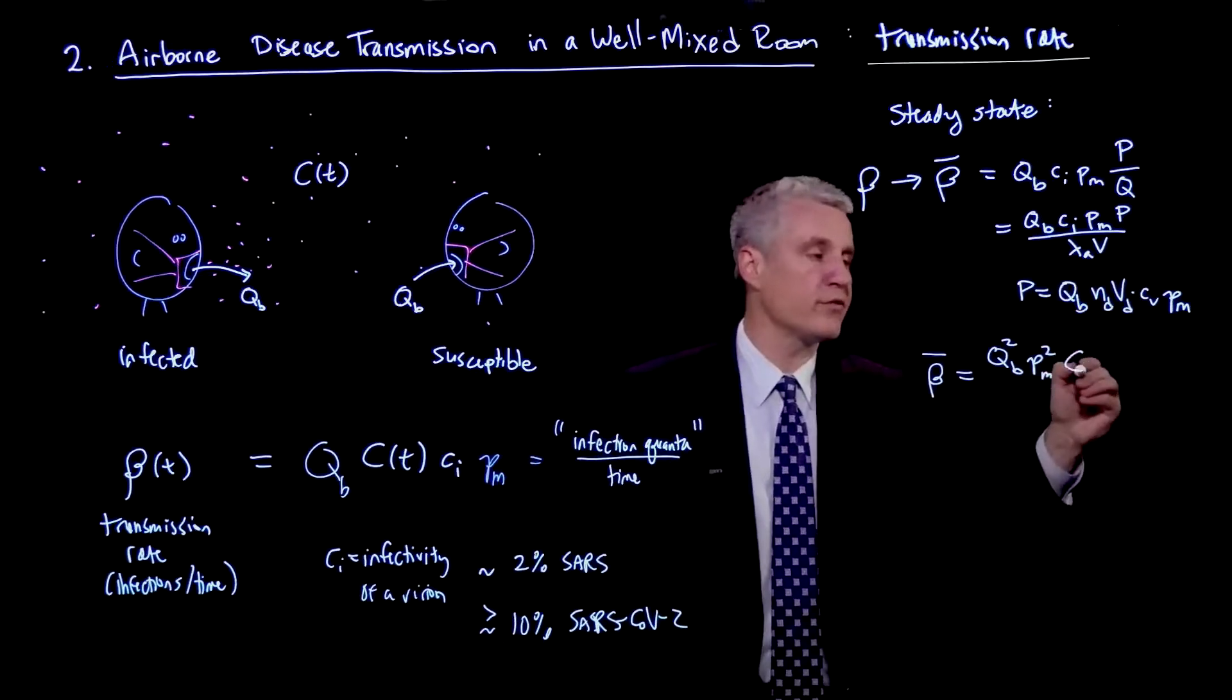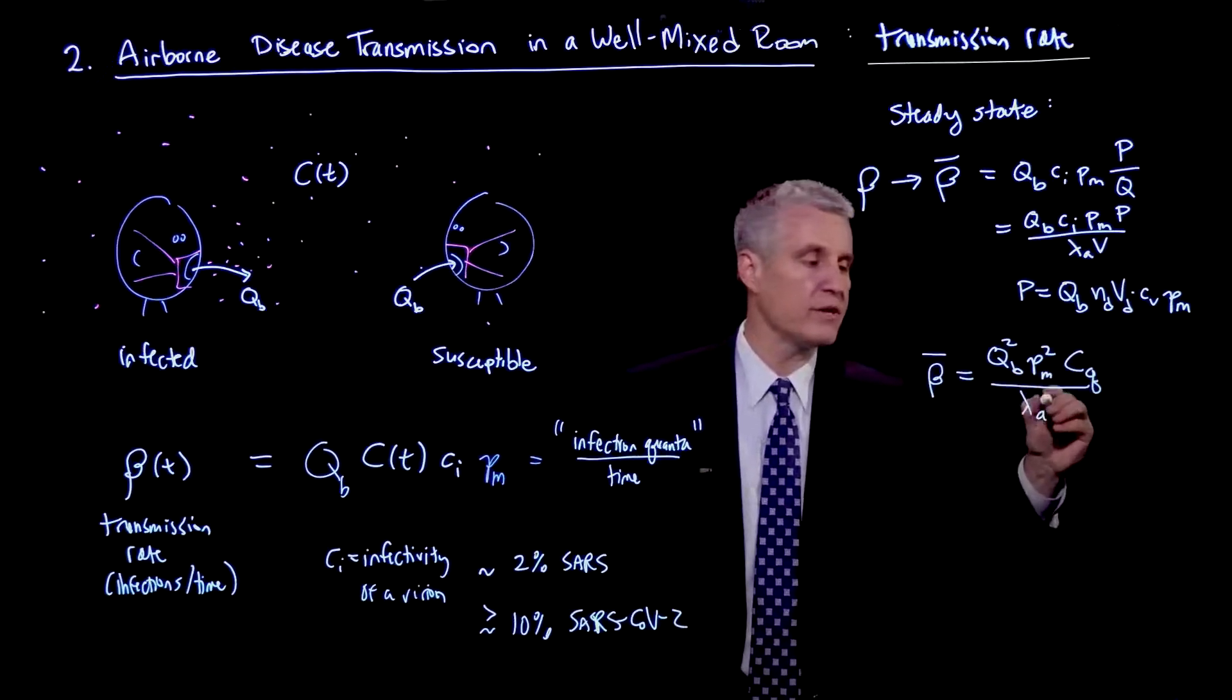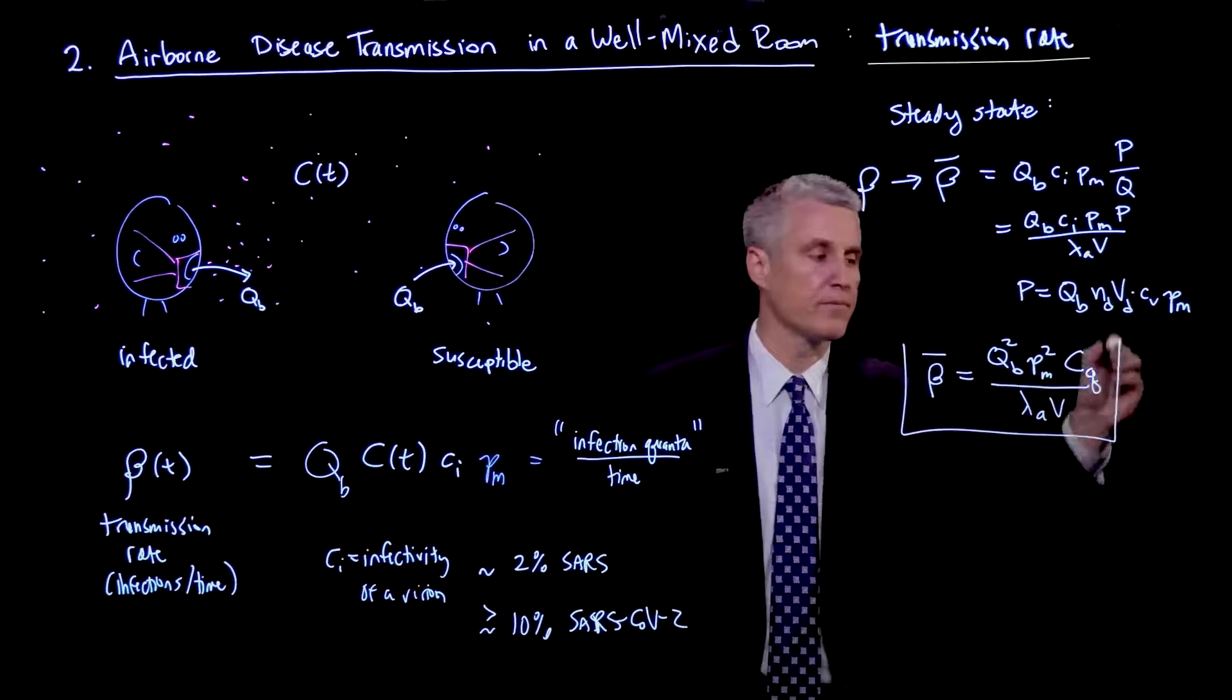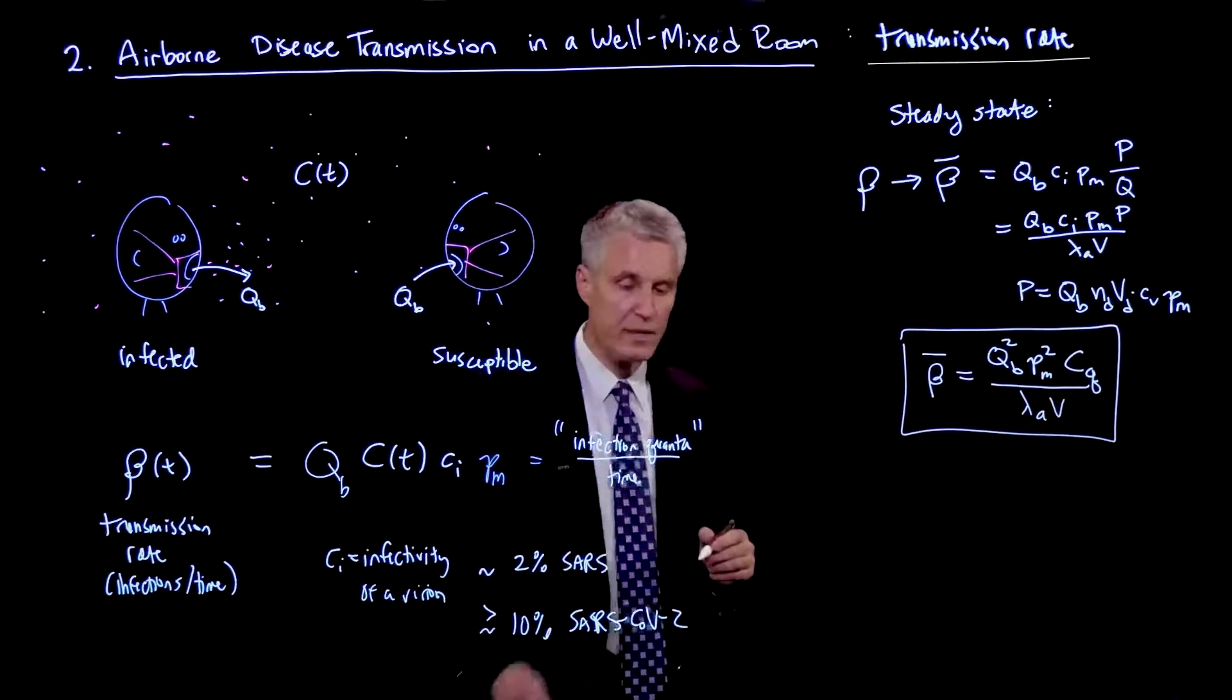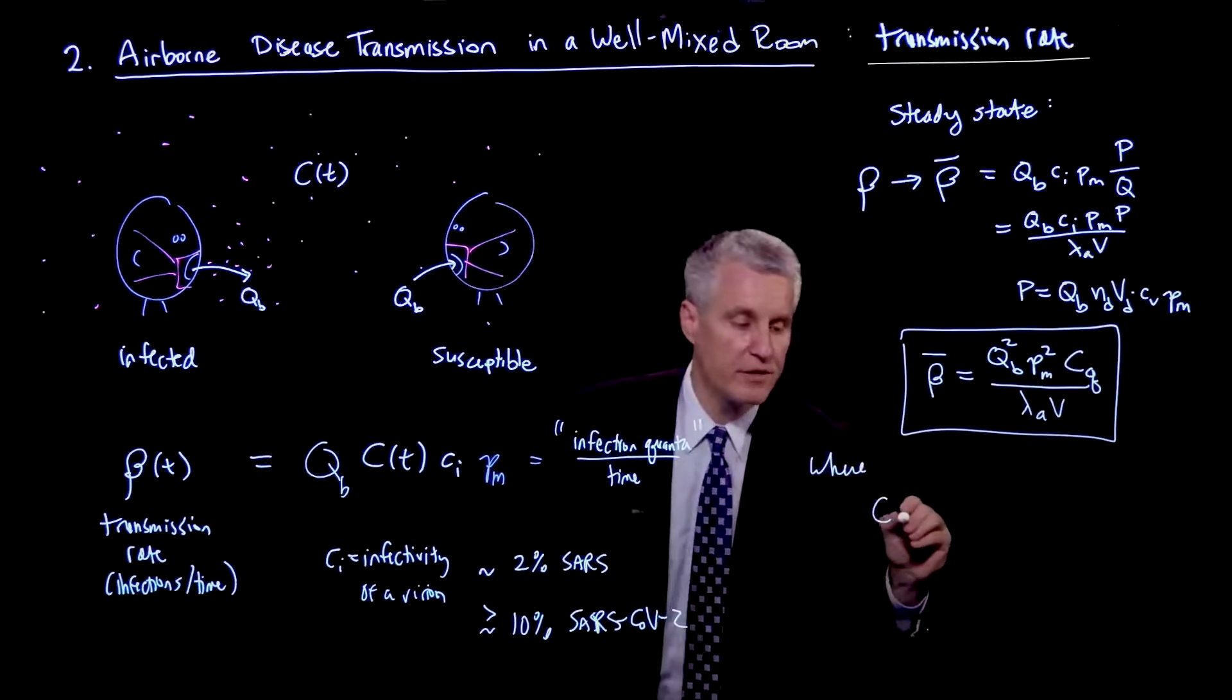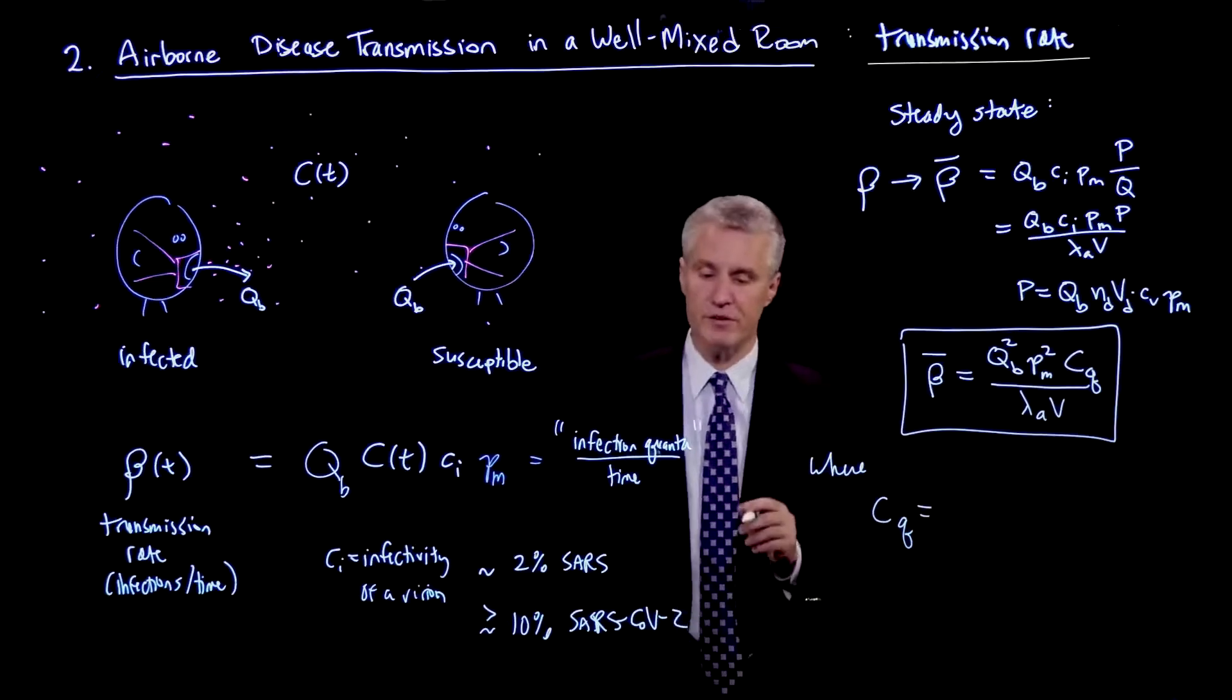And then we'll lump all the parameters in something I'll call CQ, which I'll come back to. And then we'll leave lambda A, V in the denominator. So this is the mean transmission rate, where I've defined this important parameter CQ, which has all the information about the specific disease.